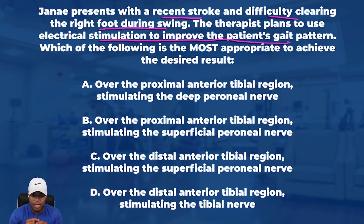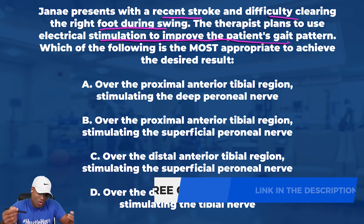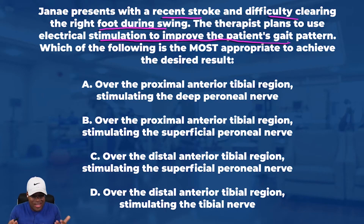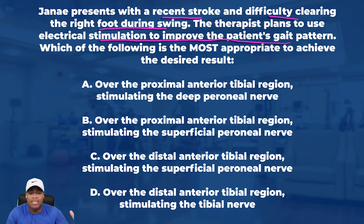Think about that for a minute. We already know it's the anterior tib we want to contract, and we know it's dorsiflexion we need. So what is the nerve that innervates the anterior tib? That's really what it's coming down to. Answer A says over the proximal anterior tibial region stimulating the deep peroneal nerve.